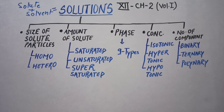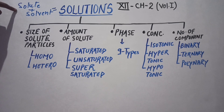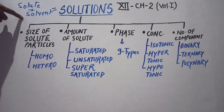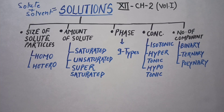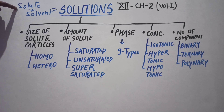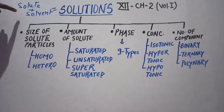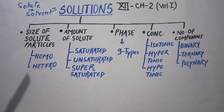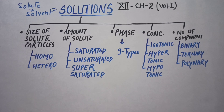Generally in class 12 we study about binary solutions. Binary solutions are those in which we have one solute and one solvent. For example, if you are going to add sugar into water, where sugar is the solute and water is the solvent, we are having only one solute and one solvent — that is a binary solution.